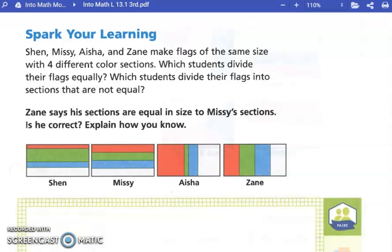Which students divide their flags into sections that are not equal? Aisha and Zane. Zane says his sections are equal in size to Missy's sections. Missy's section is correct. So are these equal to this? No. Well, they don't really look equal, do they?